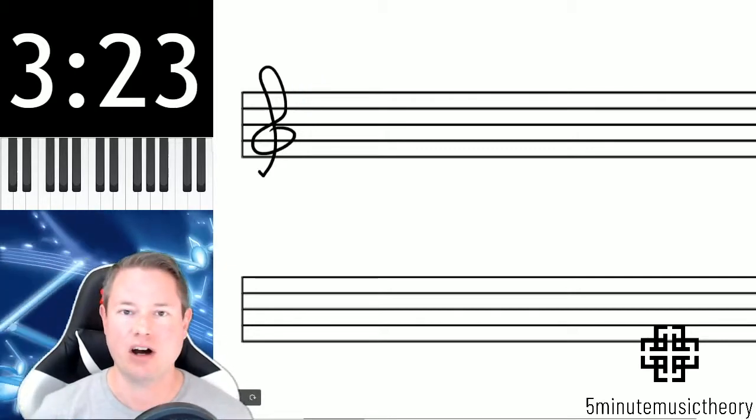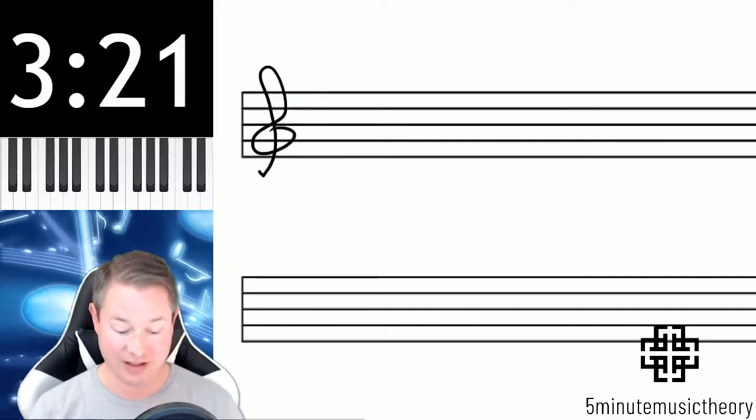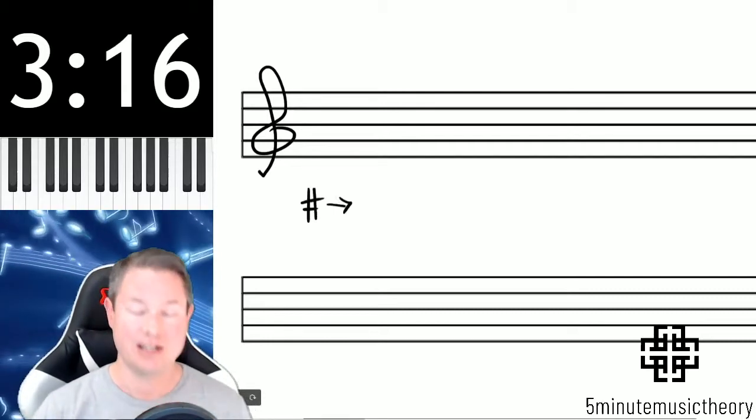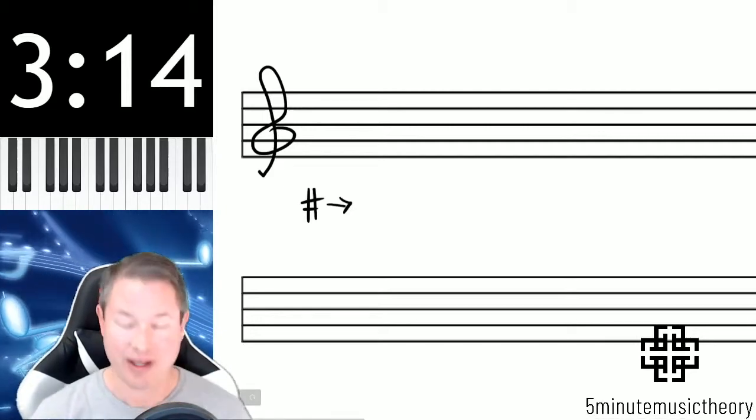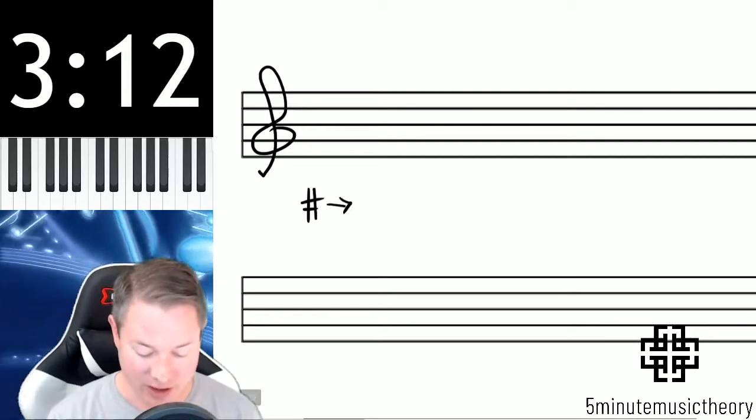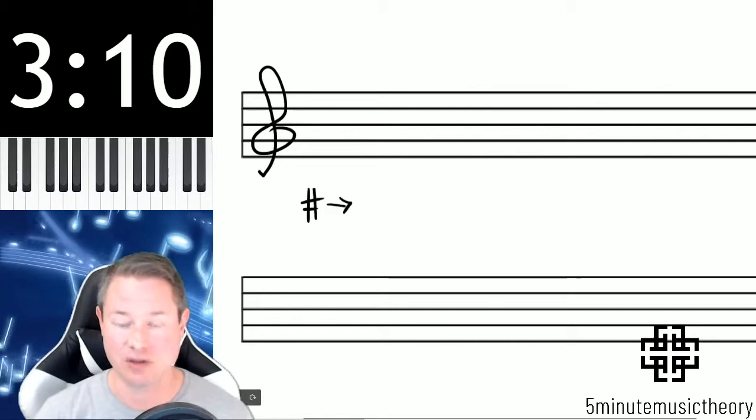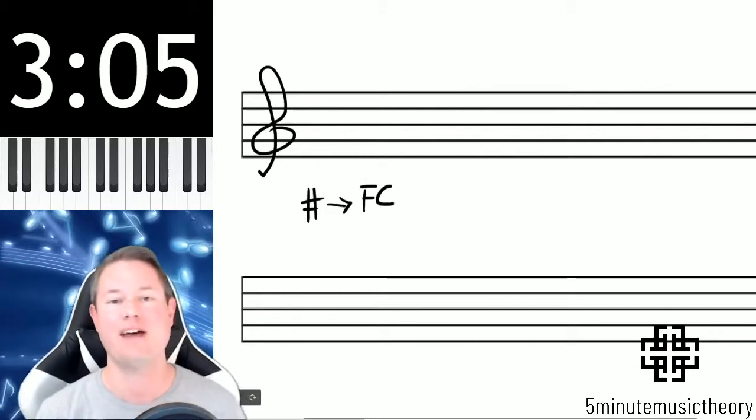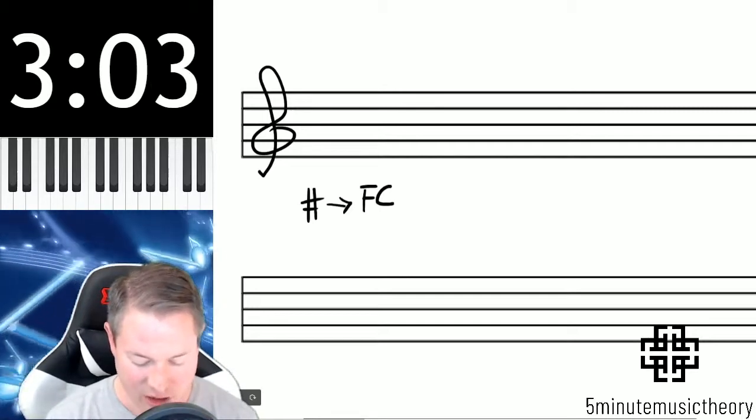Now the sharps and the flats always come in the same order. Notice that I started with F and C, that's because those are the first two sharps in a key signature. Like I said, these always come in the same order, so it's a good idea to remember this as soon as possible, and I'll show you some mnemonic devices that you can use for this as well.